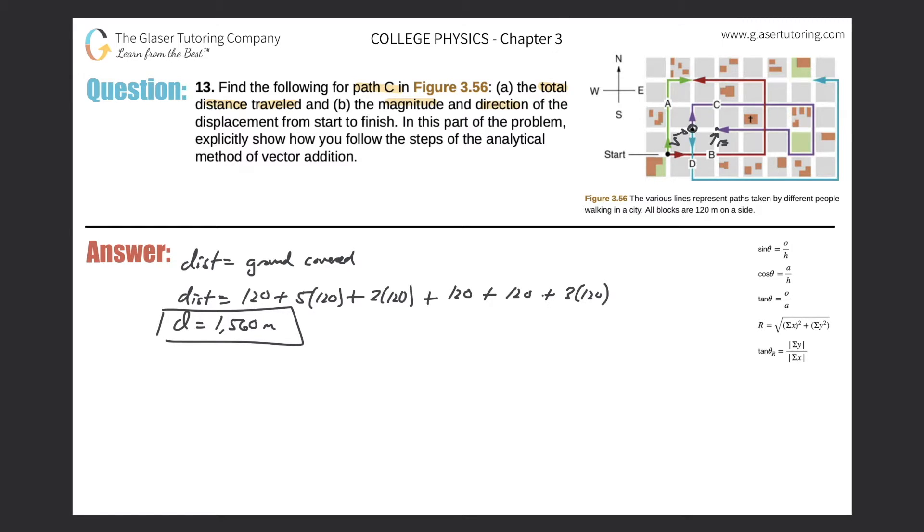It says letter B: the magnitude and direction of the displacement from start to finish. Let's erase these start and finish points for now. Let me put them in red—here's the start point again and here's the end point.